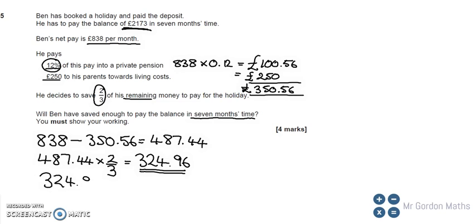£324.96 times seven for the seven months. How much money has he saved by the end of the seven months? He saved £2,274.72.